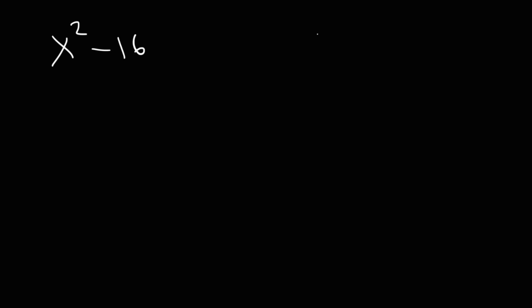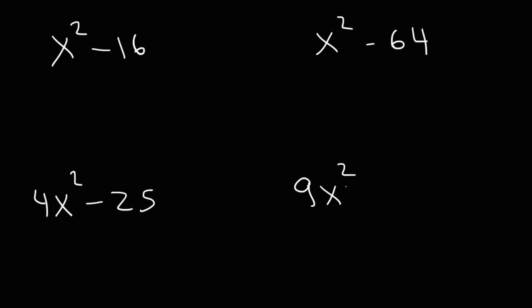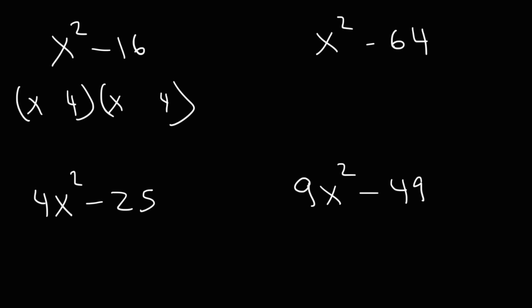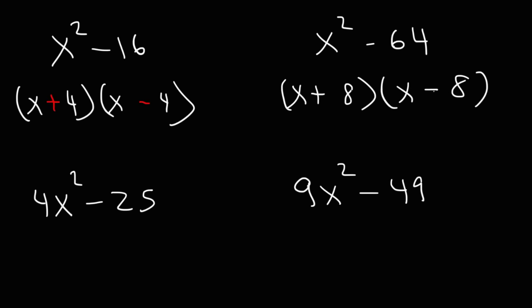Now consider expressions like x squared minus 16 or x squared minus 64. This is the difference of perfect squares. Take the square root of x squared — which is x — and the square root of 16, which is 4. One factor is positive and one is negative: x plus 4 times x minus 4. Similarly, the square root of 64 is 8, giving x plus 8 times x minus 8.